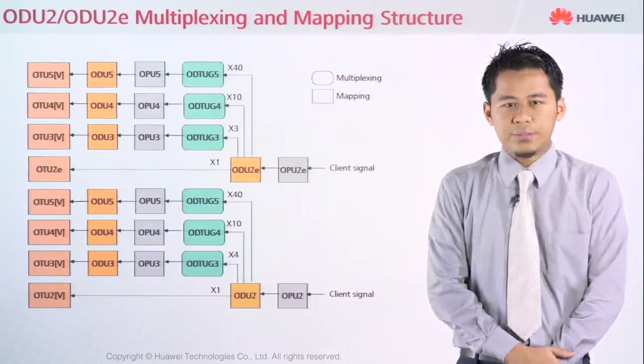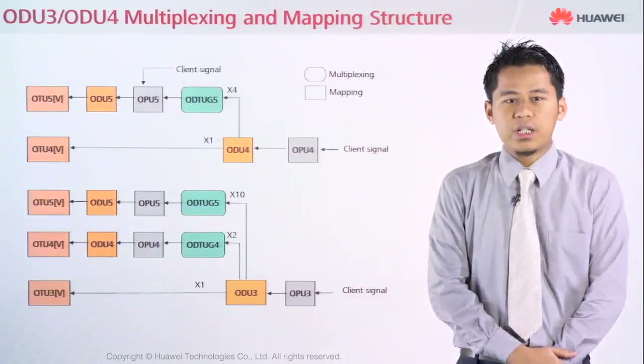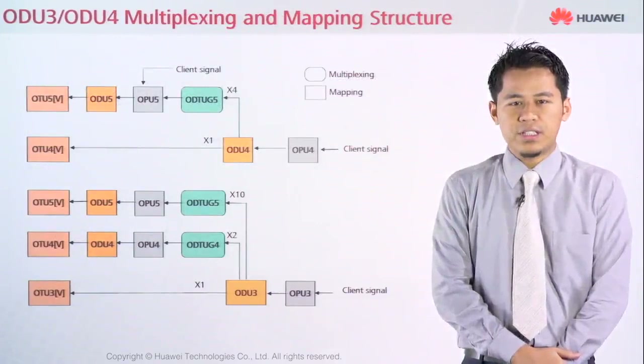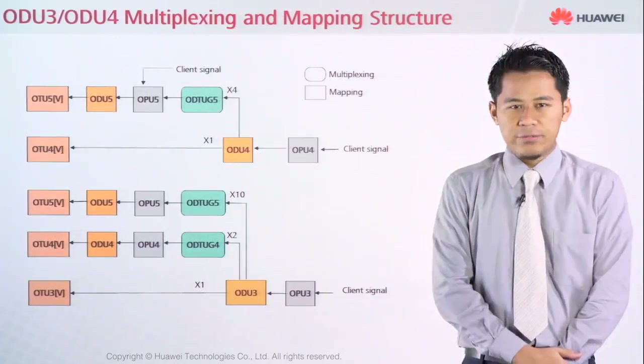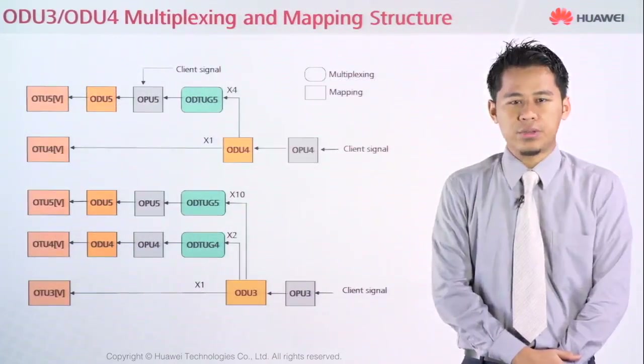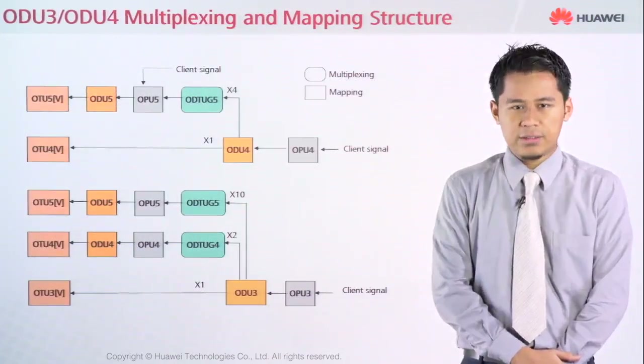The last part will be OTU3 and OTU4, which are reserved for 100 Gbps and also 40 Gbps.